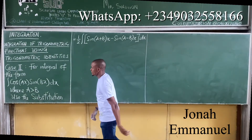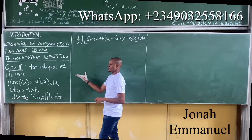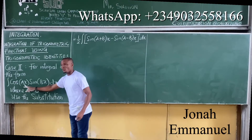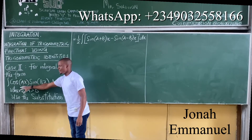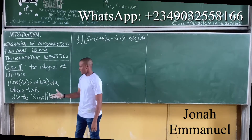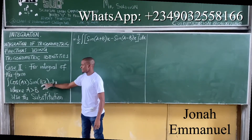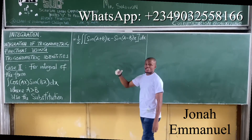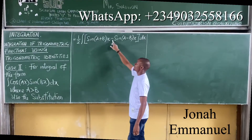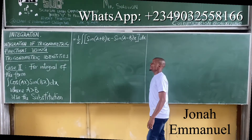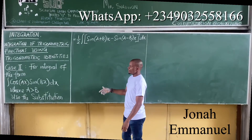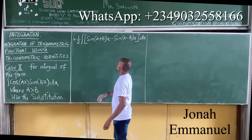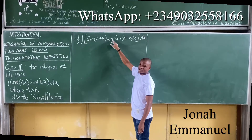Now let's look at a second case: the integral of cos(ax)sin(bx)dx, where the cosine has the greater number and sine has the lesser number. In this case, the substitution becomes: 1/2 times [sin(a+b)x minus sin(a-b)x]. The difference between Case 1 and Case 2 is that in Case 1 the formula has a plus, while in Case 2 the formula has a minus.